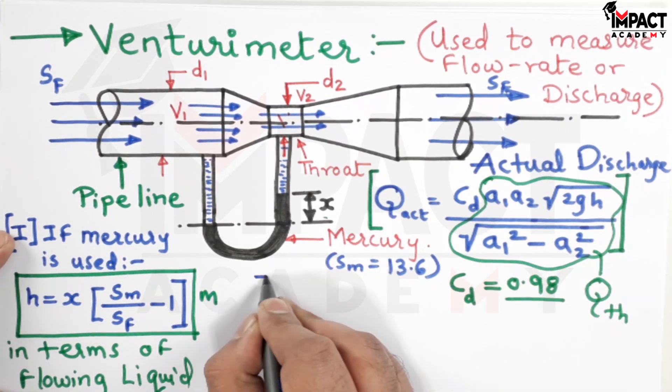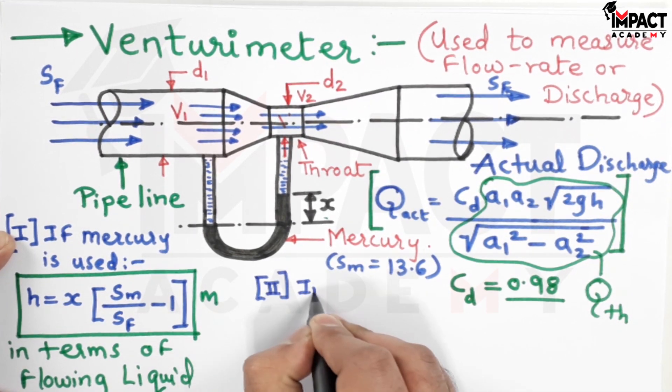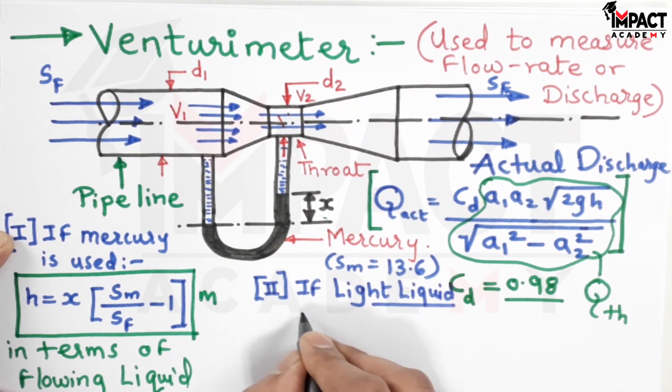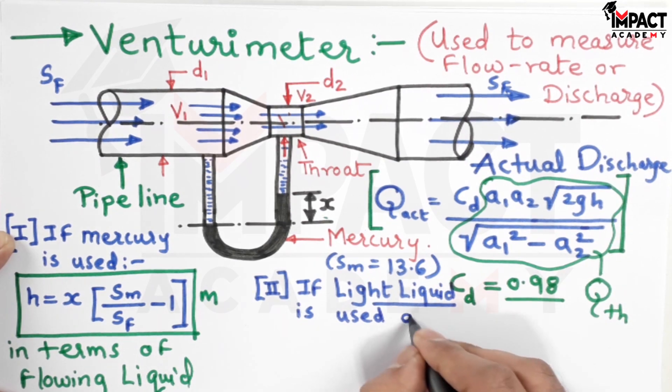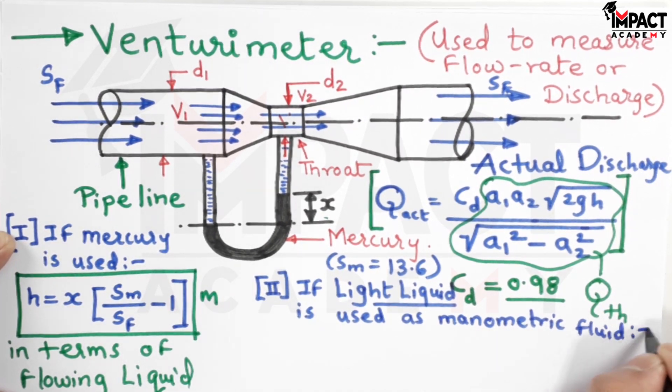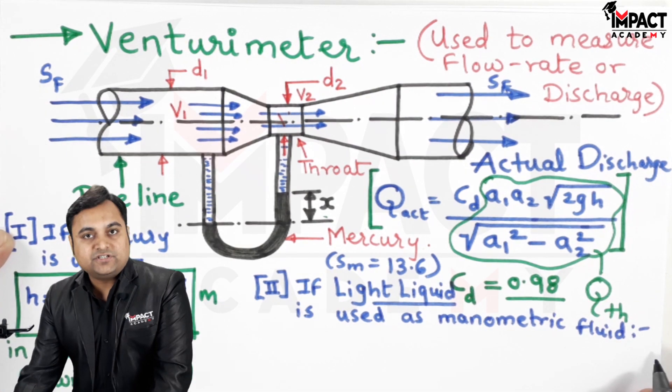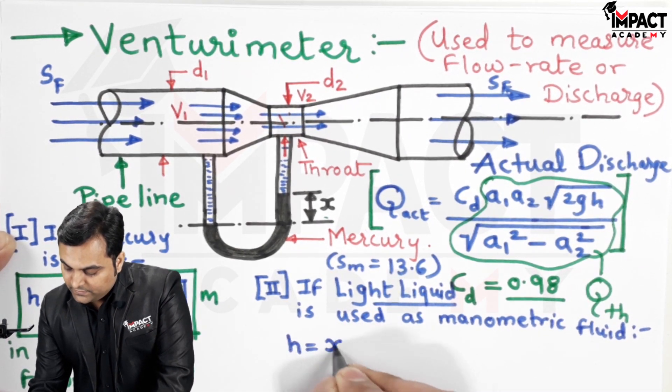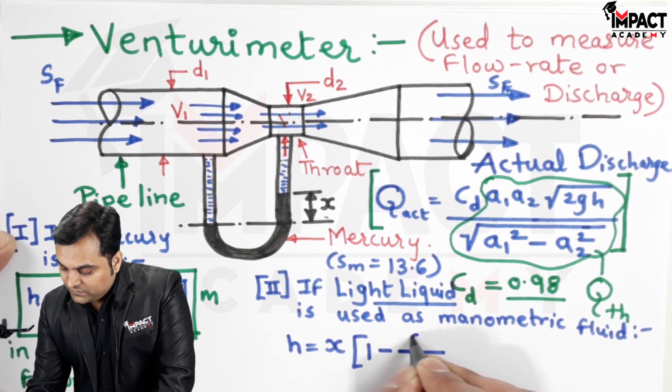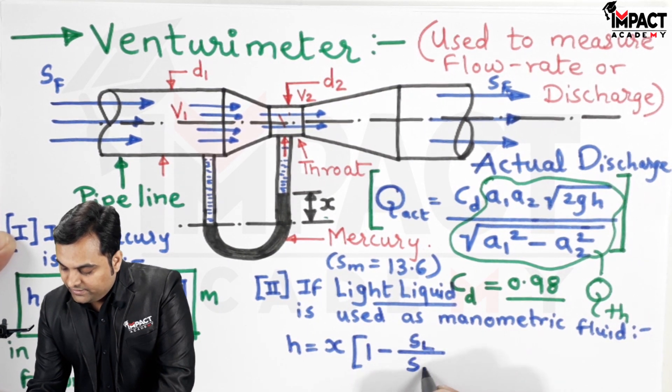For that case, if the lighter liquid is used as a manometric fluid, then H will be X into 1 minus Sl upon Sf. This will also be in terms of the flowing liquid.